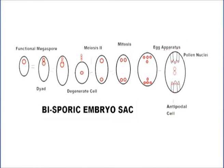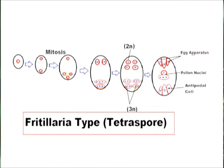In the bisporic pattern, a cell plate is formed after meiosis I but not after meiosis II, resulting in two megaspores with two nuclei each. Out of these two, one degenerates and the other remains as the functional megaspore. In the tetrasporic pattern, cell plates fail to form after both meiotic divisions, resulting in one megaspore containing all four nuclei, which remains functional.